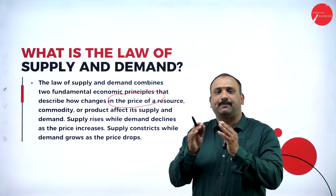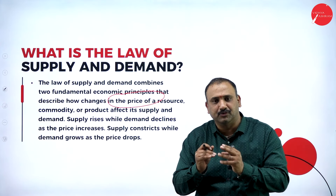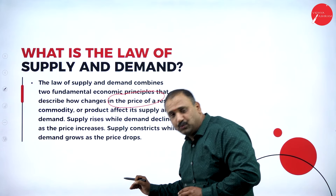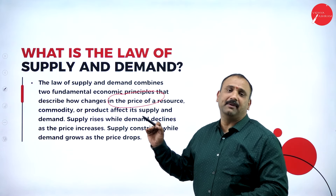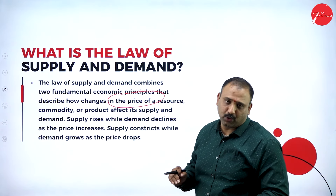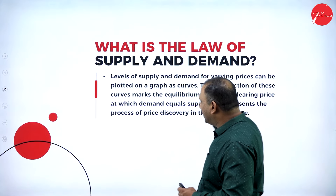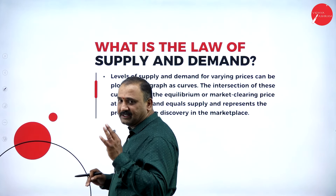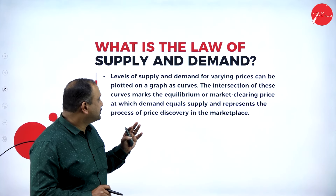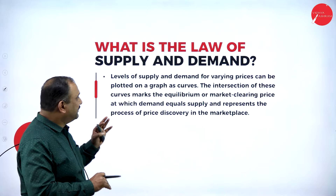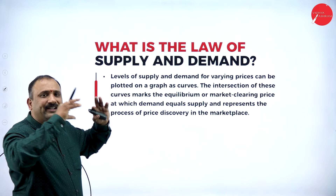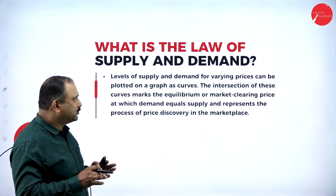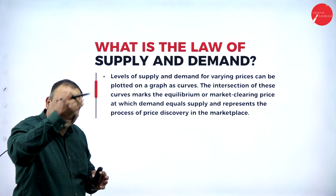Supply constricts while demand grows as the price drops. As the price keeps falling downward, the demand would start growing up. The levels of supply and demand are very important because they can be plotted in a graph with a curve, showing how supply and demand relate to each other.